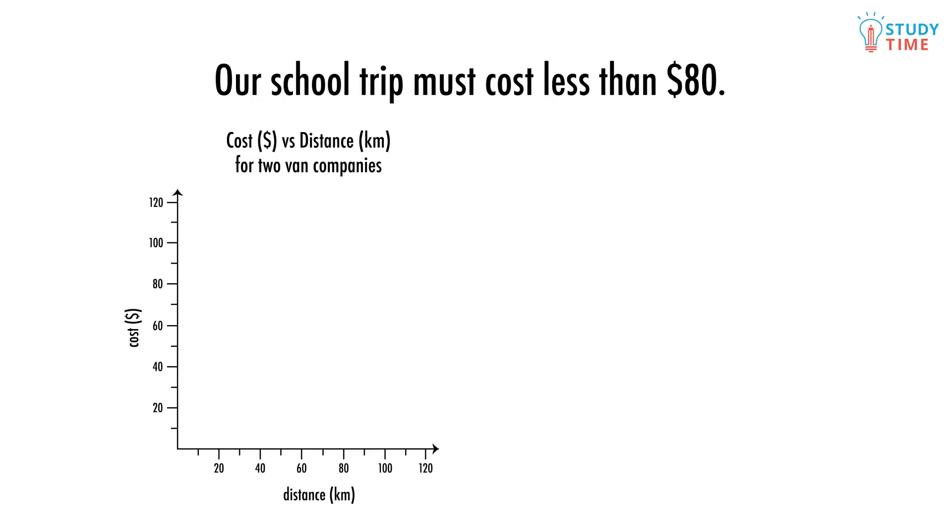Say you're organising a van for a school trip. Your school can only afford the trip if the cost of the van is less than $80. There are two companies in your town that will rent you a van. The first, Adventure Inc., is shown by this line. The second company, Terrible Vans Limited, is shown by this new line here.